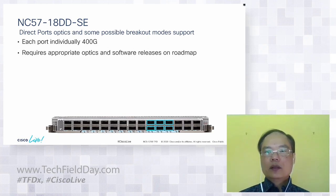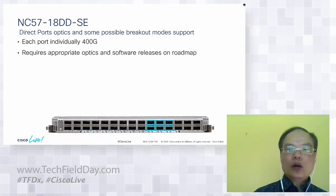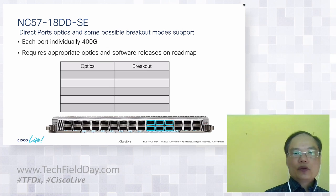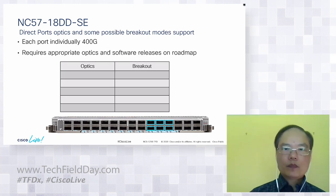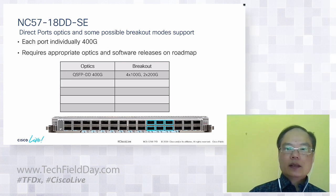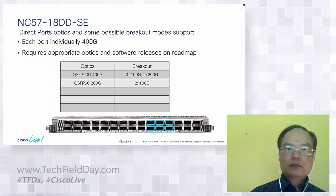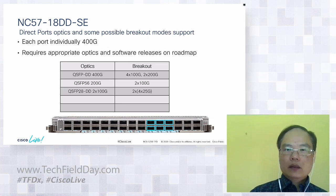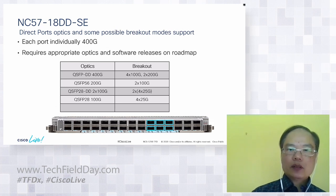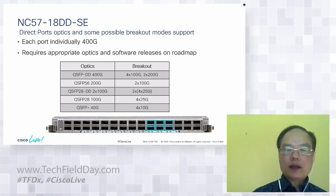For direct ports each with individual 400 gig, the possible optics and breakout options (subject to optics availability and software releases): QSFP-DD 400-gig optics can break out to 4x100 and 2x200. QSFP56 200-gig optics can break out to 2x100-gig. QSFP28-DD 2x100-gig optics — each individual 100-gig can break out to 4x25. QSFP28 100-gig can break out to 4x25. QSFP Plus 40-gig optics can break out to 4x10. The direct port support is relatively straightforward.